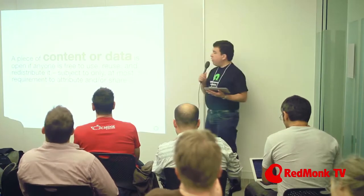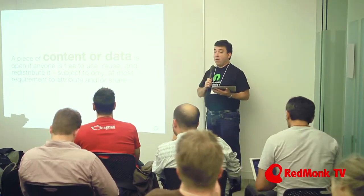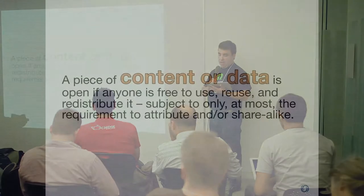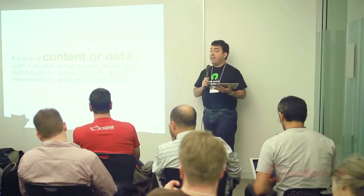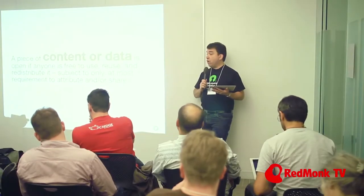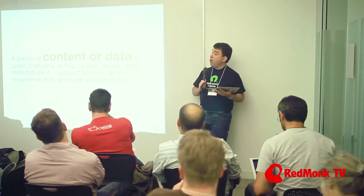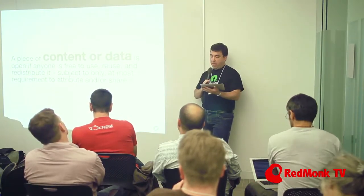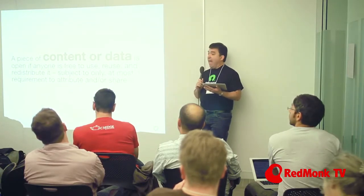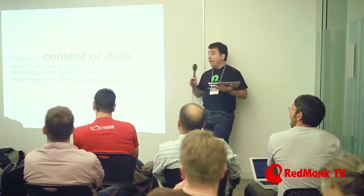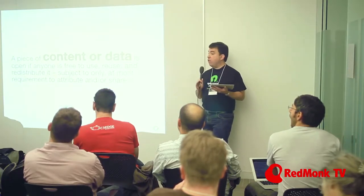Let's start with the thing itself that we're trying to work with: content or data. Already we're in the weeds, because content and data are treated very differently legally. We have to come up with a definition of open data that works across these different legal frameworks — data on the one hand, content on the other. We want to make sure we have definitions and licensing that actually makes the data open despite the fact that we're mixing these different things together.